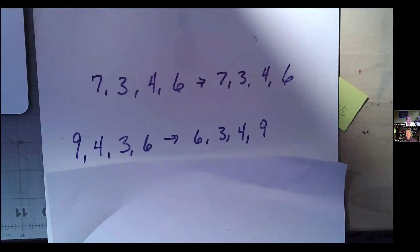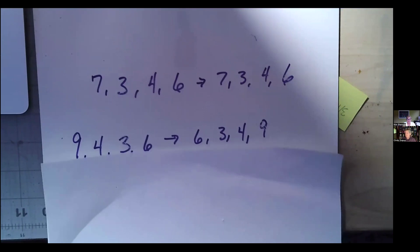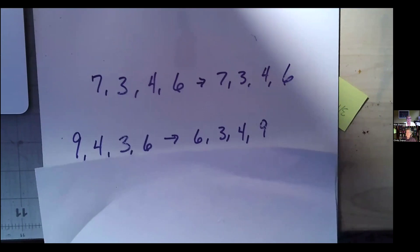Digits backwards — I say nine, four, three, six. And you would say? Six, three, four, nine. Isn't it nice when I have the numbers there for you? But the only way I could do it, Cindy, was to close my eyes.